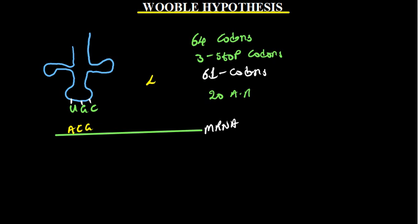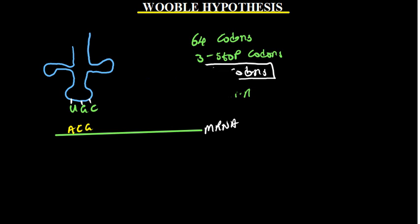But the total number of tRNAs is less than 61, meaning that some codons do not have their own specific tRNA. So what type of tRNAs are able to pick up such codons which do not have specific tRNAs? This is what leads us to the phenomenon we call the Wobble Hypothesis.